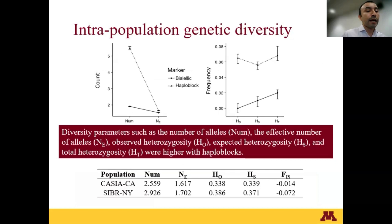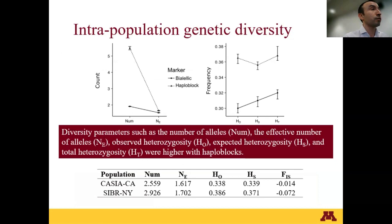That is really good because we are increasing the number of alleles and decreasing mono-allelic loci. Additionally, we measured the intrapopulation diversity, comparing monomorphic, mono-allelic, and multiallelic markers. Different parameters — number of alleles, effective number of alleles, observed, expected, and total heterozygosity — were all higher in the haplotype blocks, the multiallelic markers. That is good because we are capturing more diversity using this type of marker.